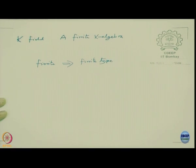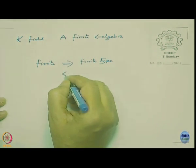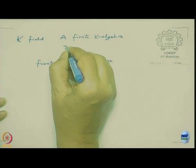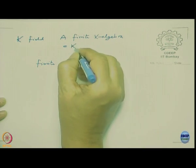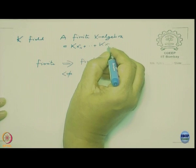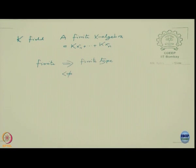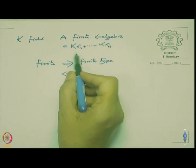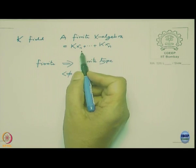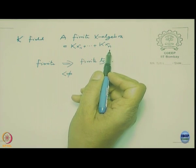Obviously finite implies finite type, but not conversely. In the finite case, A equals K·x_1 + ... + K·x_n — meaning x_1 through x_n are K-module generators of A. The notation makes clear that we take all K-linear combinations of the x_i's, and that exhausts A.